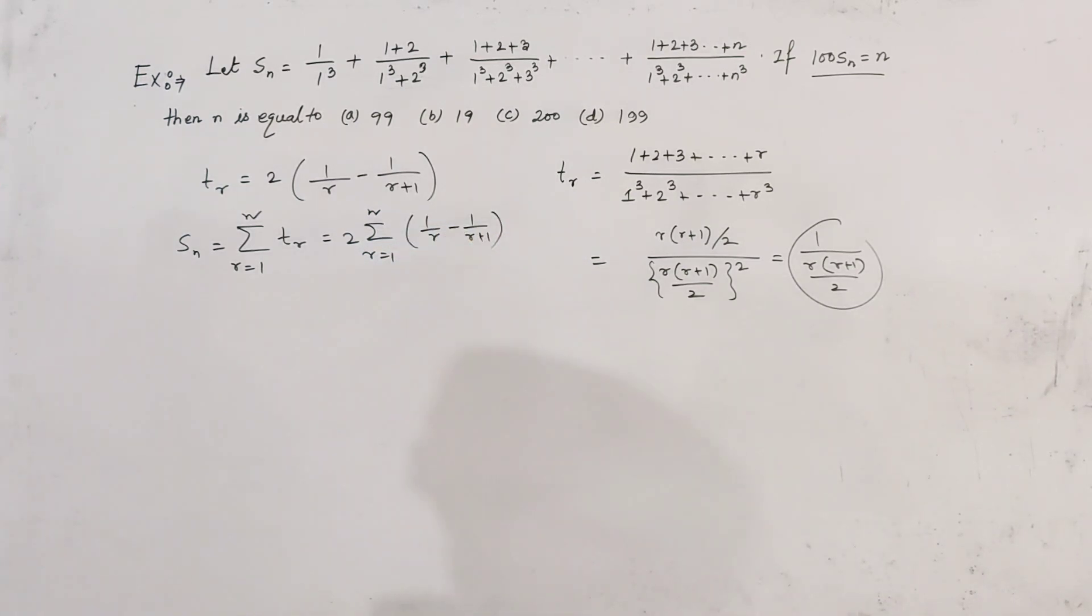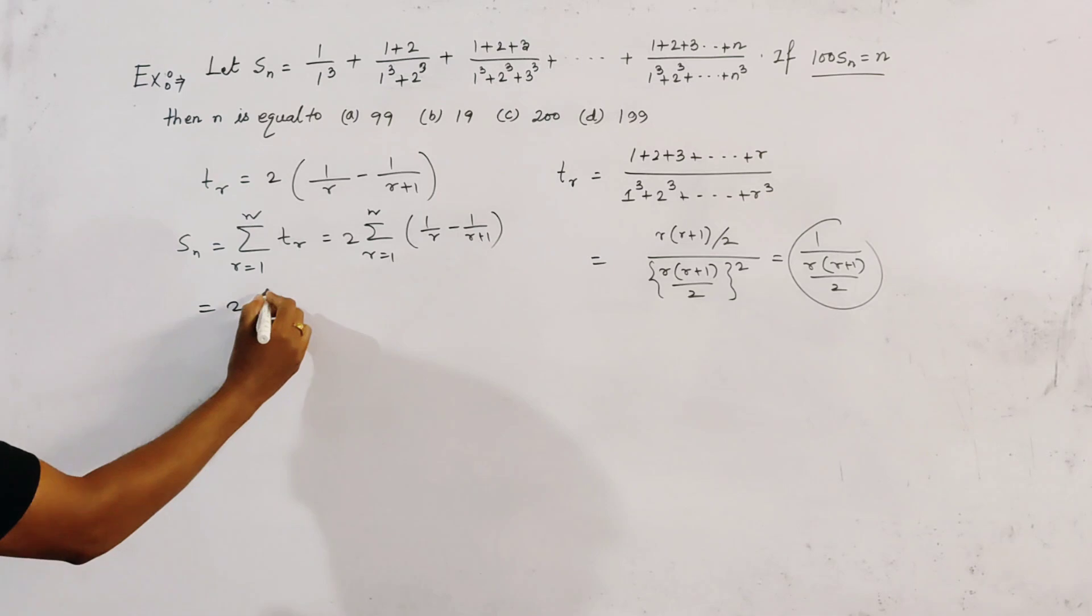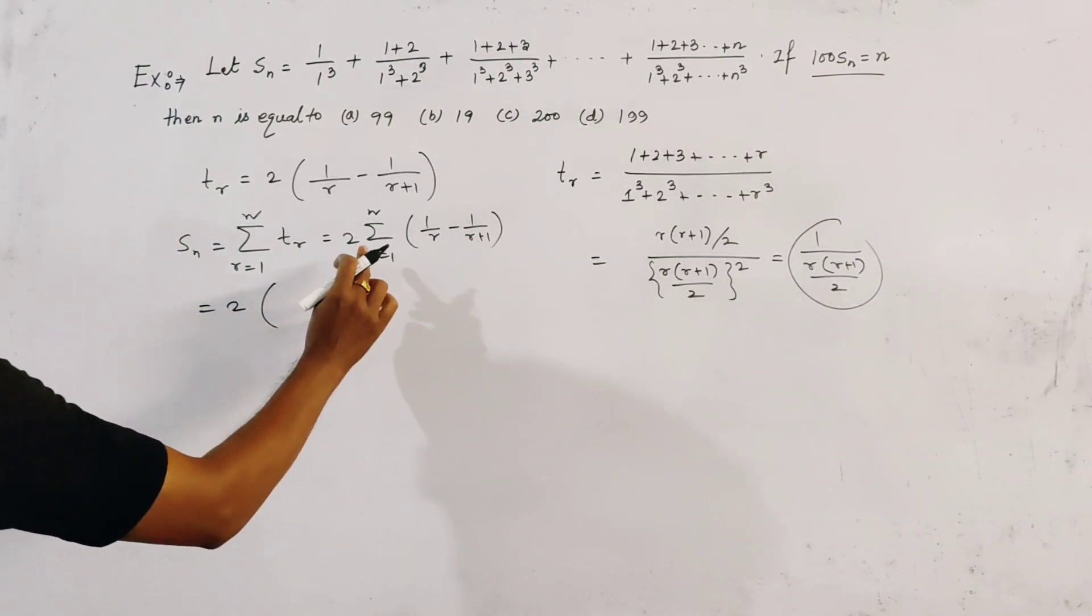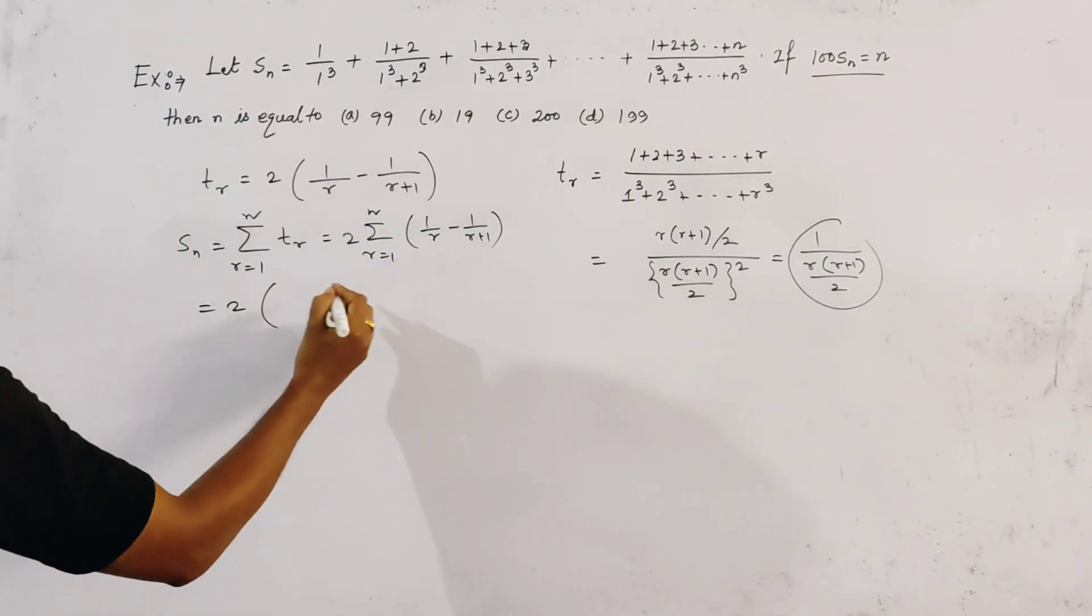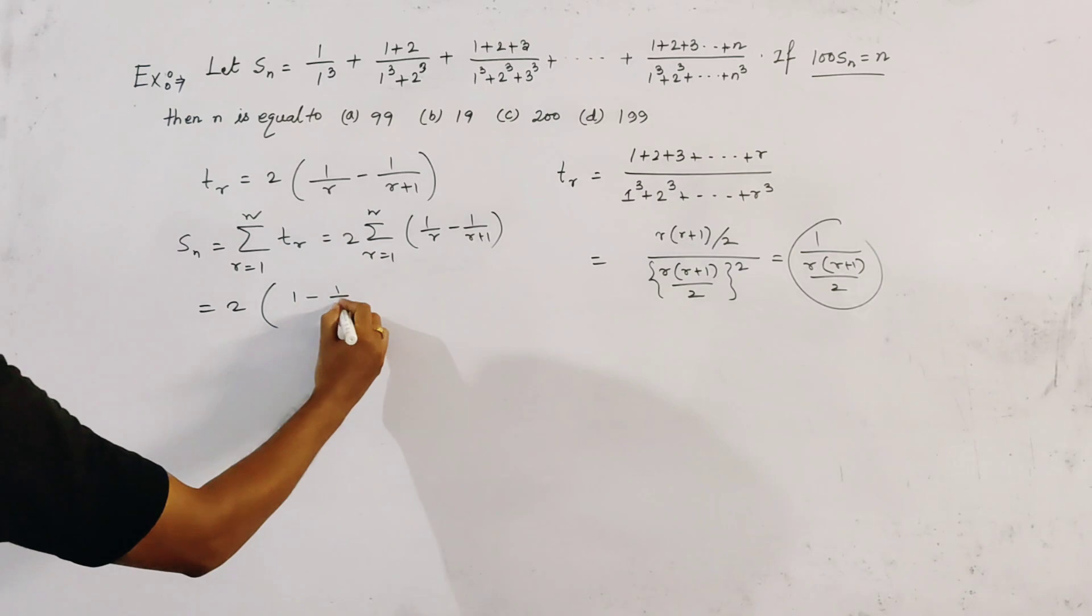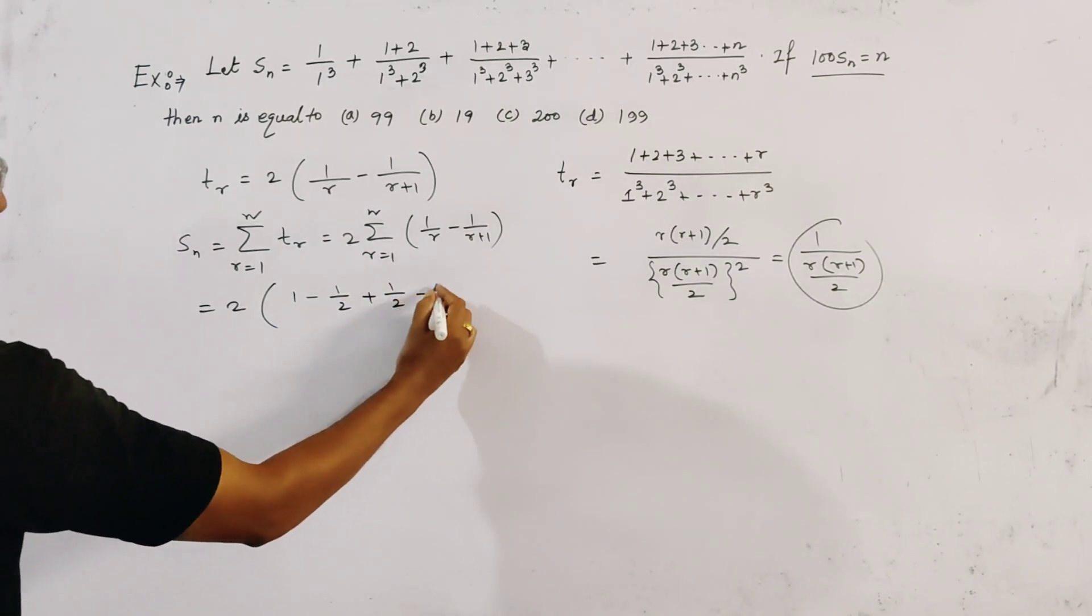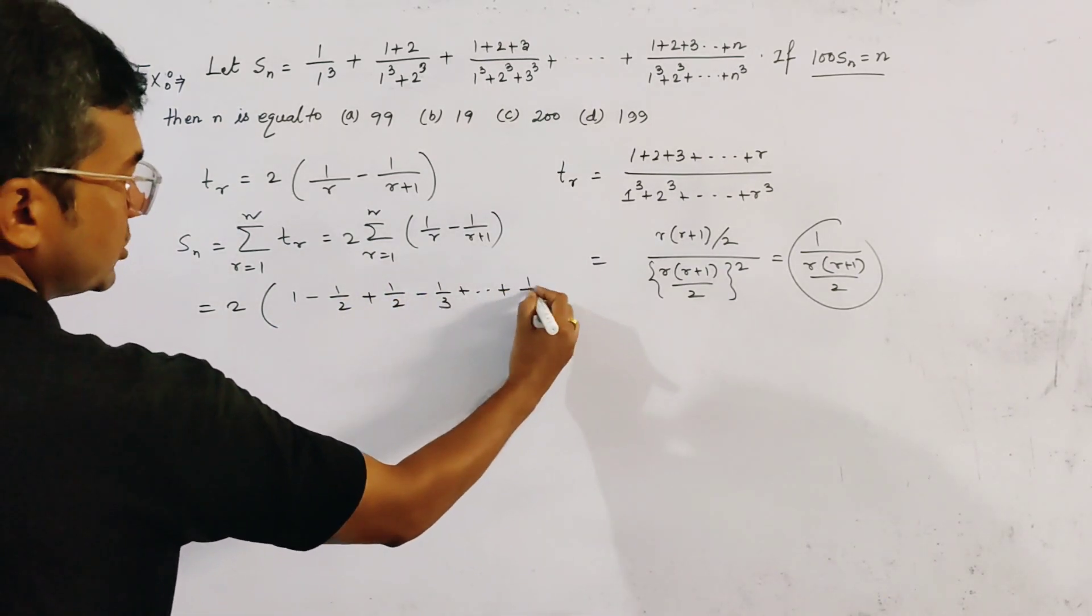Clearly 2 times, if we put the value of r from 1 to n, we get 1 minus 1/2 plus 1/2 minus 1/3 and so on. The last term is 1/n minus 1/(n+1).